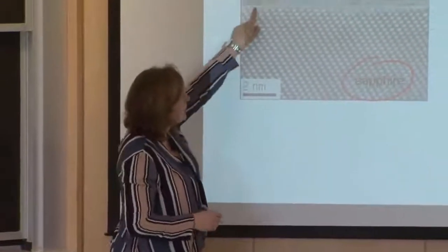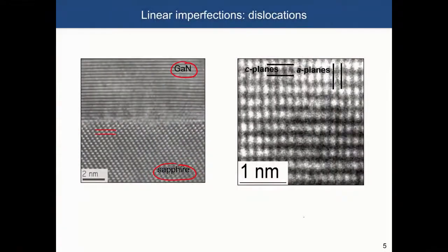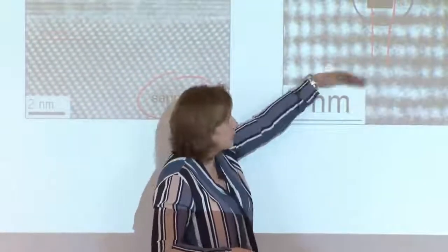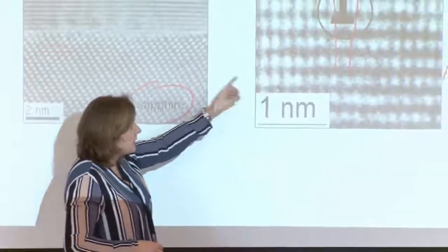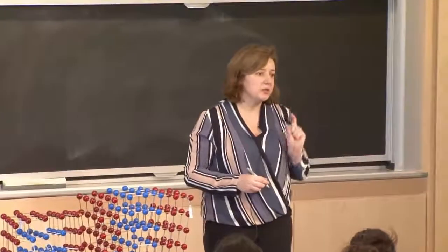You have sapphire, an obvious interface, and then gallium nitride continues. When you zoom in, you observe a discontinuous lattice. A lattice plane continues throughout the material, but another particular plane stops. There is an extra plane inside the gallium nitride material that does not propagate through the sapphire — a dislocation formed simply because of a small difference in lattice parameters between sapphire and gallium nitride.